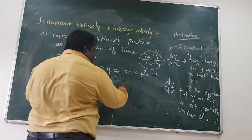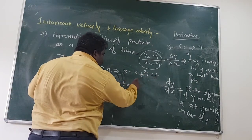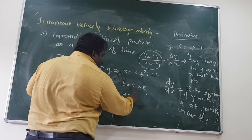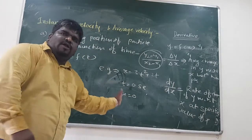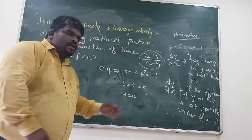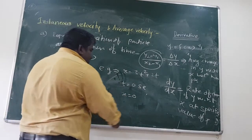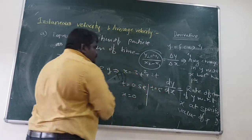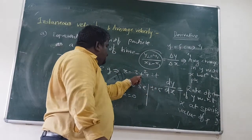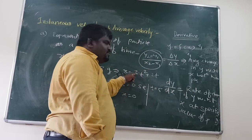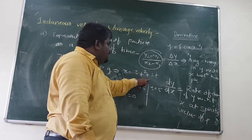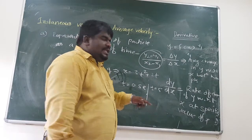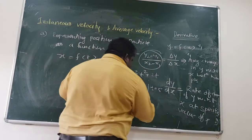So you substitute t equal to 0 second, you will get x equal to 0 — so you are starting from 0. You substitute t equal to 5 seconds, you will get some value of x: 25 into 3 is 75, plus 10, is 85 — so x equals 85 meters when t equals 5 seconds.